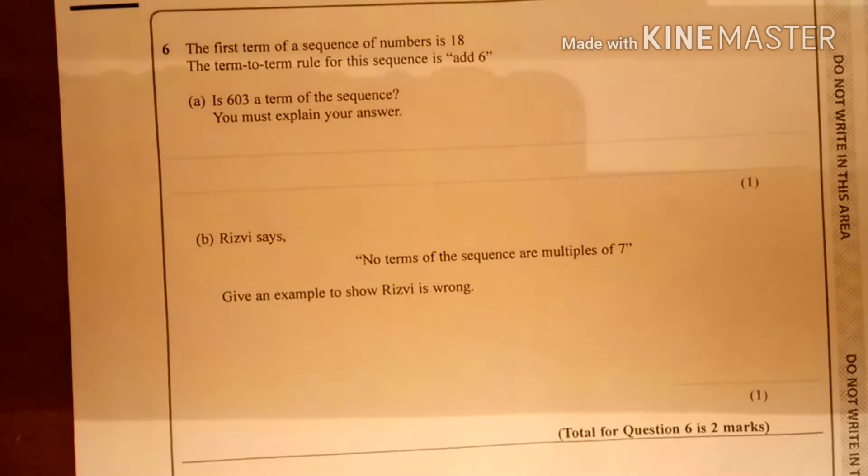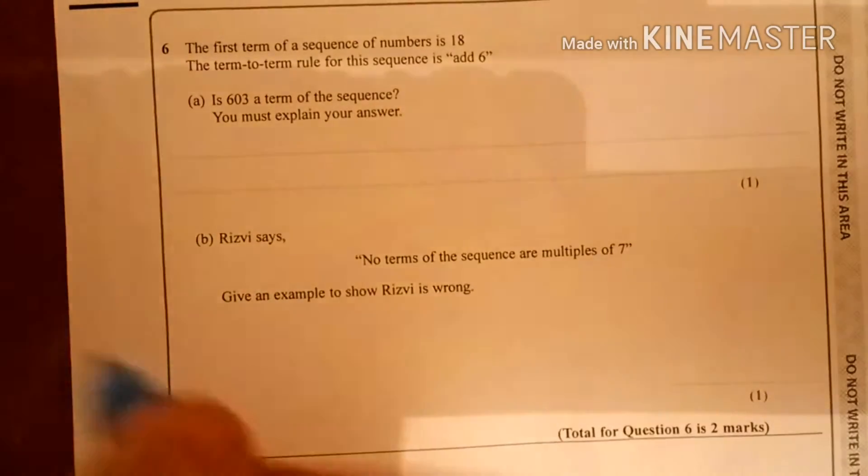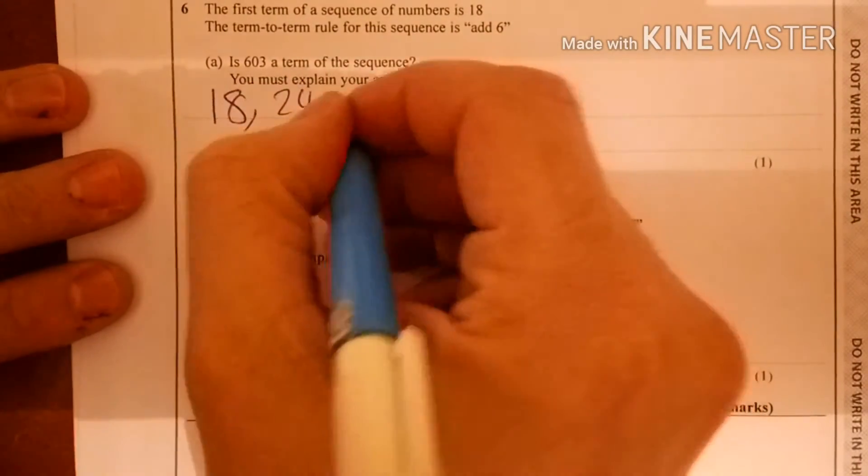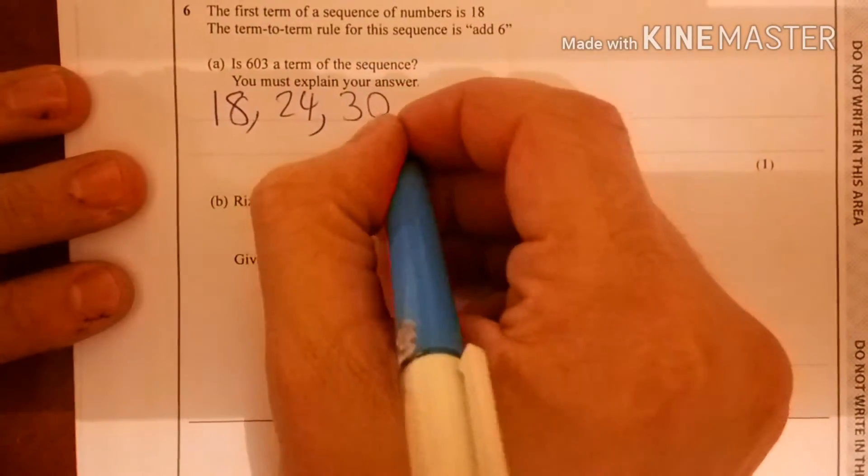Right, so let's actually write out this sequence to help us out. Let's start off with 18. 18 add 6 is 24. 24 add 6 is 30. 30 add 6 is 36.